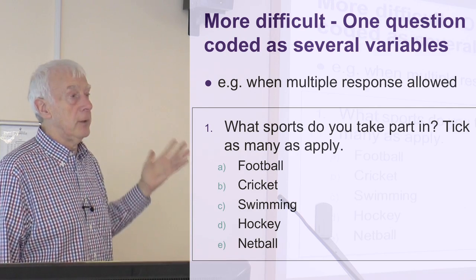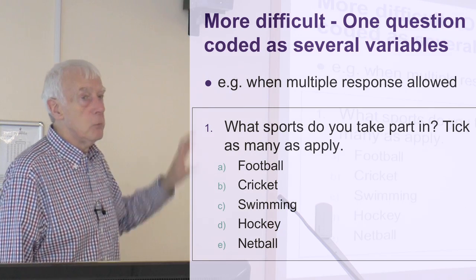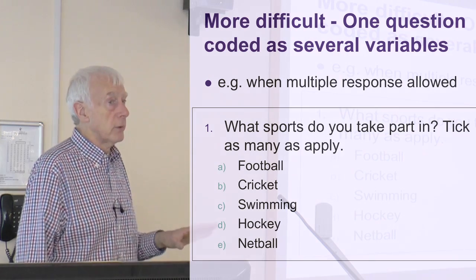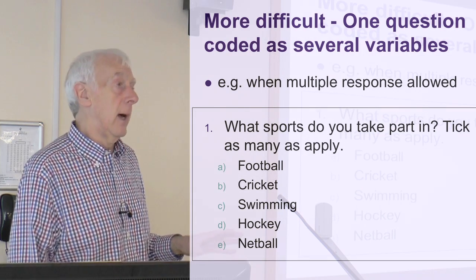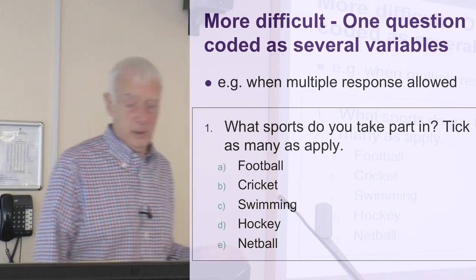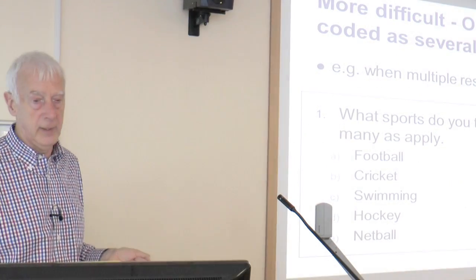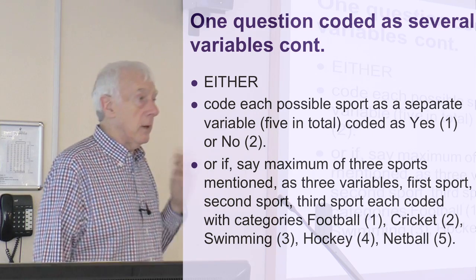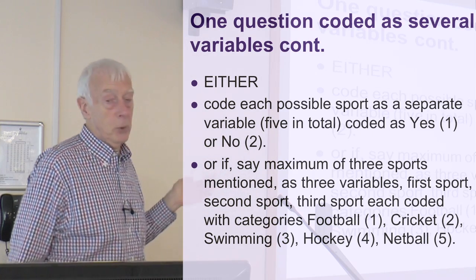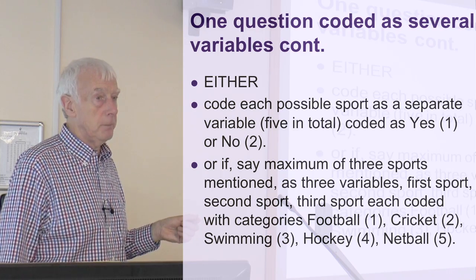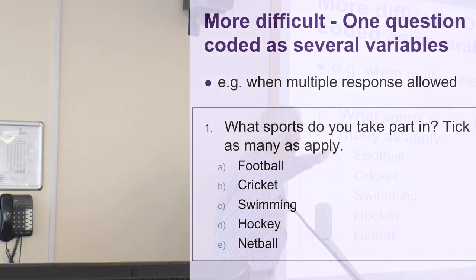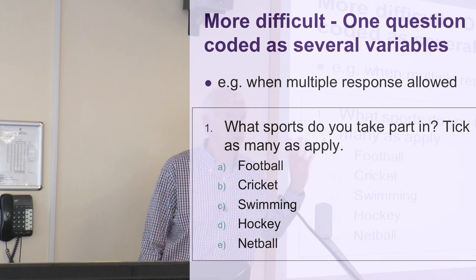So in this case we have to convert the single question into more than one variable. How we do that depends on what we want from the results eventually, and maybe how simple it is to do and how easy it is to set the thing up. We have some choices. The first option is to code each possible sport as a separate variable. So if I go back to this question here, you can see I will have a variable for football, a variable for cricket, one for swimming, hockey, and netball — five variables coming from this one question.